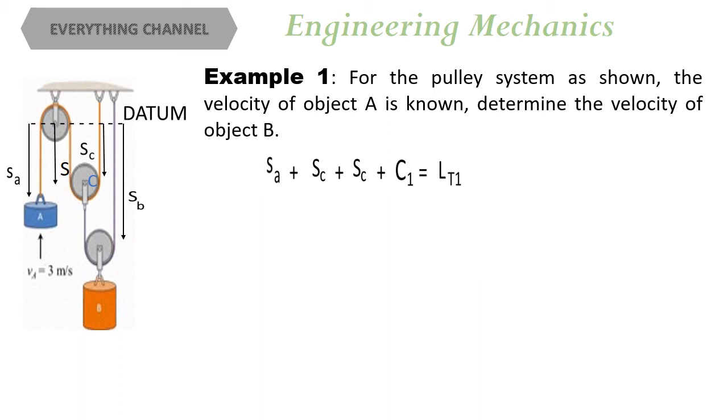And then for the second rope, the total length equals SB minus SC plus SB plus some constant length equals total constant length LT2.